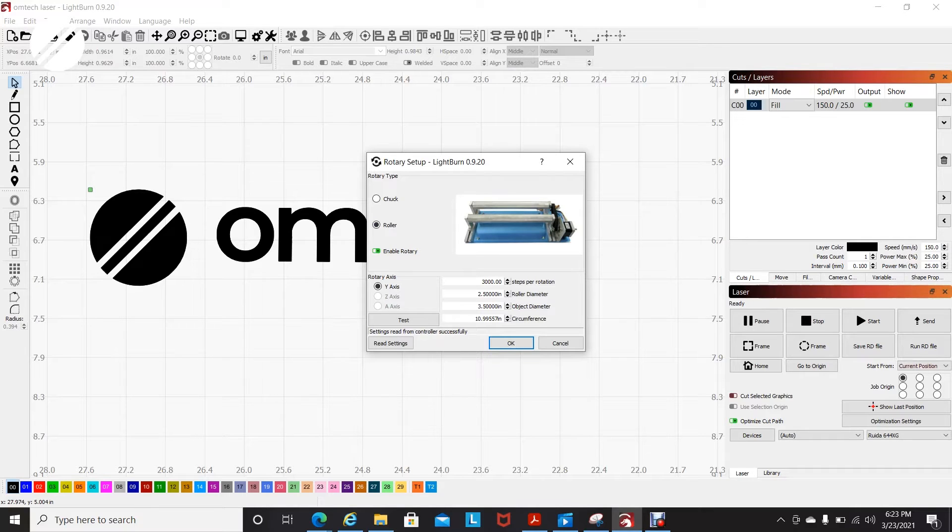For steps per rotation, we would recommend to start at 3000. The roller diameter of the four-wheel rotary device is around 2.5 inches. The object diameter will vary on your tumbler. In our example, ours is 3.5 inches in diameter. You will then press OK.